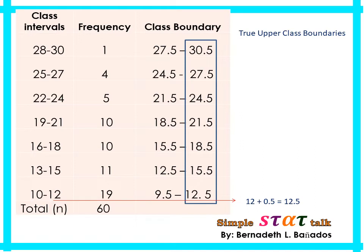For the true lower class boundary we used subtraction, but this time, since we are solving the true upper class boundary, we are not going to subtract but instead we add 0.5. Again, where does 0.5 come from? That is half of our precision value. The precision value for whole numbers is 1, so half of it is 0.5. That is why we have 12 plus 0.5, giving us a first true upper class boundary of 12.5.